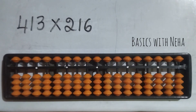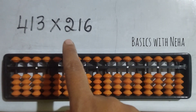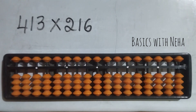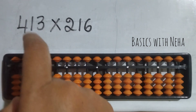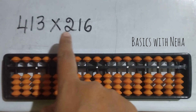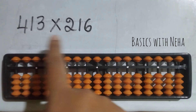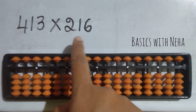Hello, welcome back to my YouTube channel. In today's video I'm going to show you three-digit into three-digit multiplication using the abacus tool. The first question is 413 into 216. The number of digits will tell you how many rods you have to take — there are six numbers in total, so take the sixth rod from the house pointer ones rod.